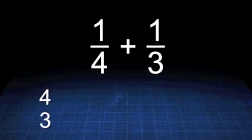To find a common denominator, we have to find the multiples of 4 and 3. Multiples are the numbers we get when we skip count.